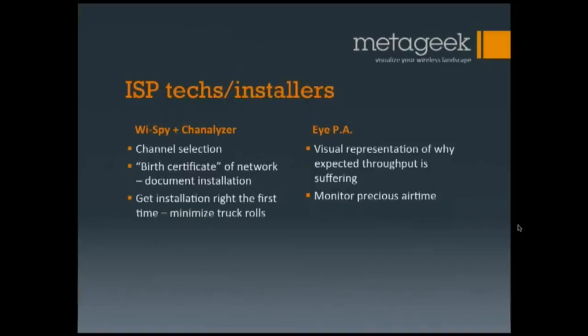ISP techs and installers — this use case is all about going in, installing, verifying, getting a deliverable, checking the box, and then hopefully never coming back if everything goes well, because truck rolls to a residence or commercial business are extremely expensive. We want to get it right the first time. These ISP techs and installers will use Wi-Fi and Channelizer to find the proper channel placement of the AP. Create a birth certificate of the network — install your network, run a report, spit it out, hand it to your client, hand it to your boss, and you're done.